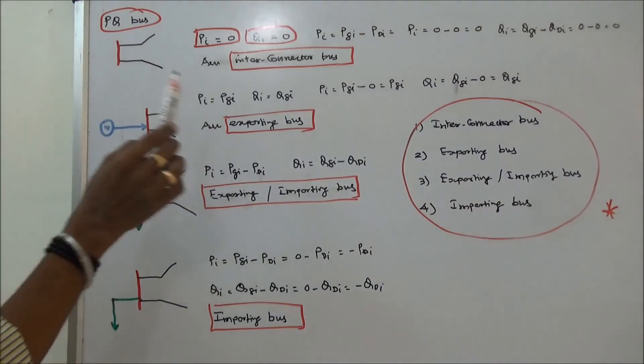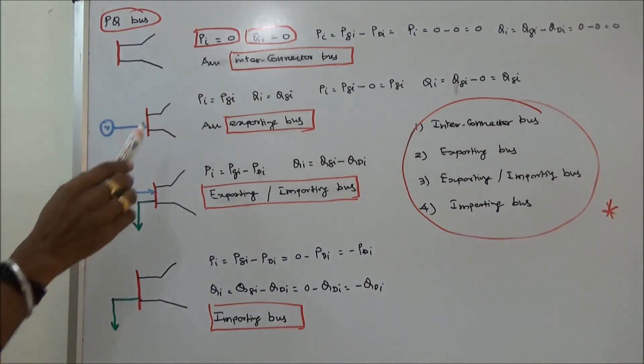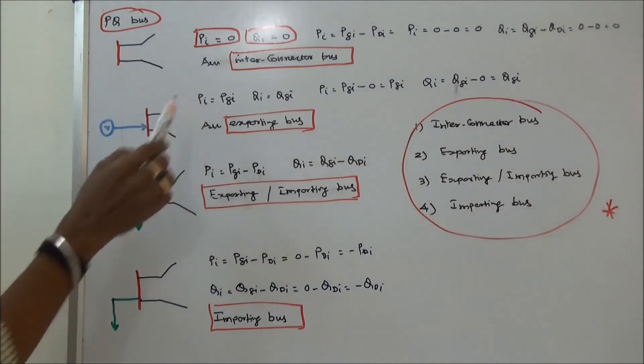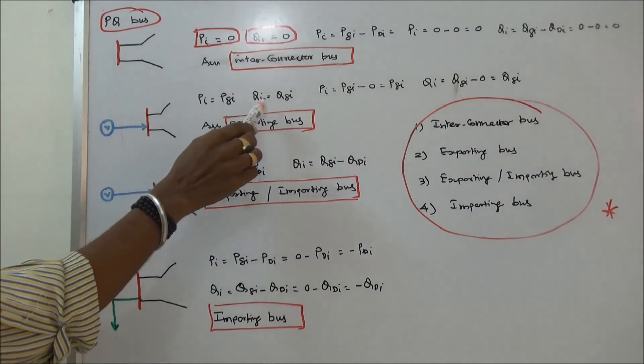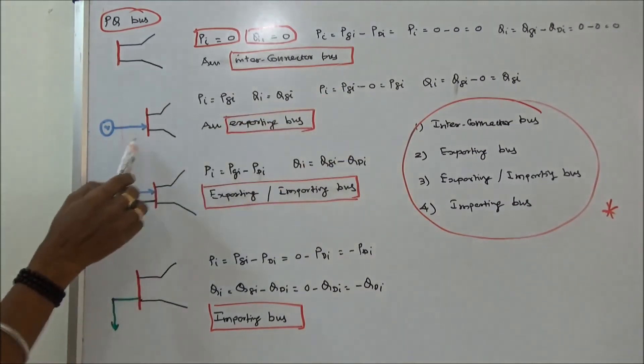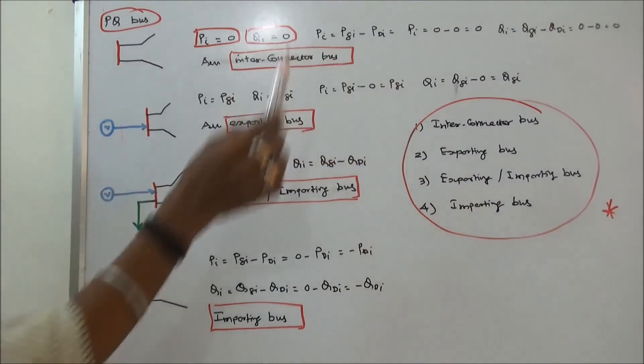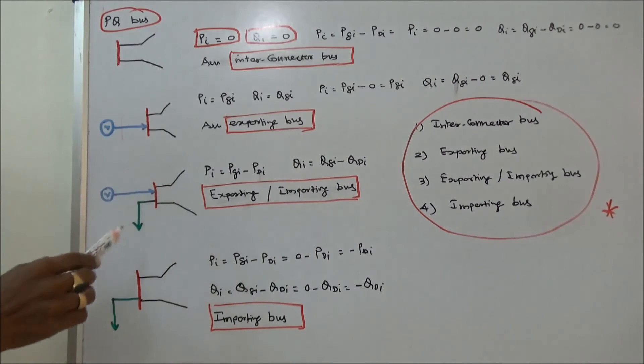Second is an exporting bus. Here we have connected one generator. Therefore PI is equal to PGI, QI is equal to QGI. That is PI is equal to PGI minus PDI. There is no load, therefore PI is equal to PGI. This bus is called an exporting bus.